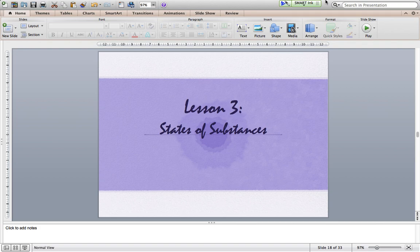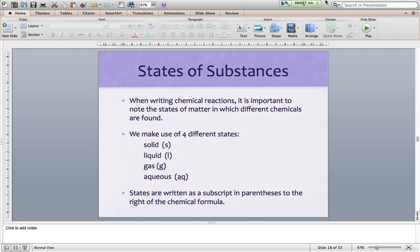Perhaps some of you have noticed when you've come across chemical equations that next to the formula or the chemical symbol for a compound or element, there is an odd-looking little letter written in parentheses as a subscript with that formula. Those are the states that the substance is in in the chemical reaction. We use four different states: solids, liquids, gases, and aqueous.